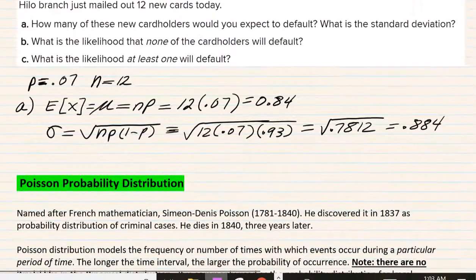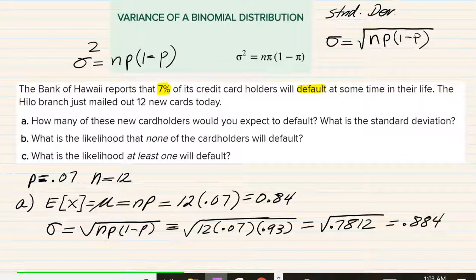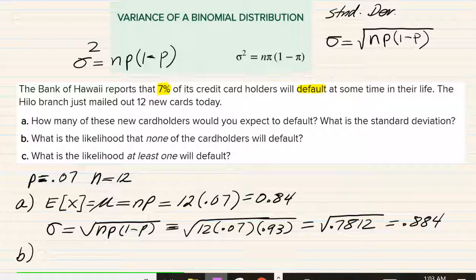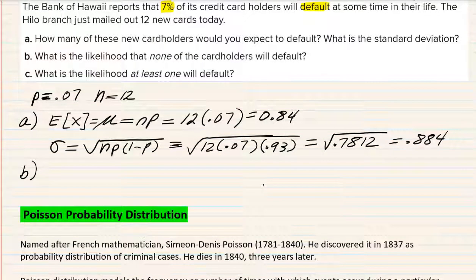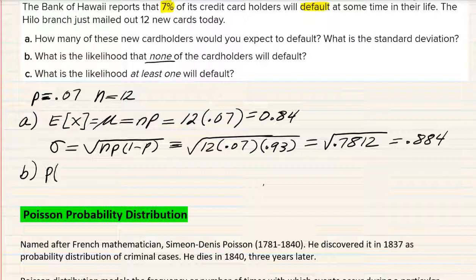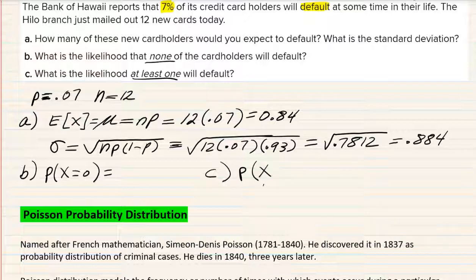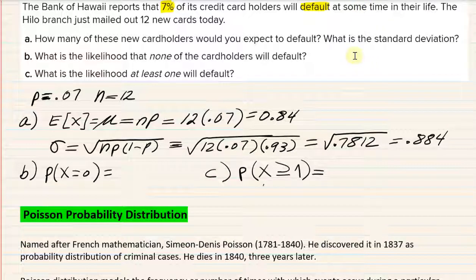For parts B and C: what is the likelihood that none of the cardholders default? That's P(X = 0). What is the probability of at least one default? That's P(X ≥ 1), or equivalently 1 − P(X = 0). We'll get both of these numbers from Megastat. Let me pause and go to Megastat in Excel.